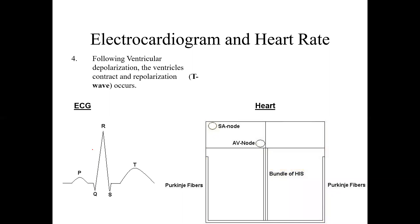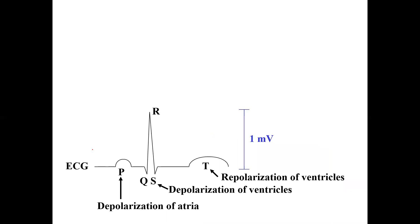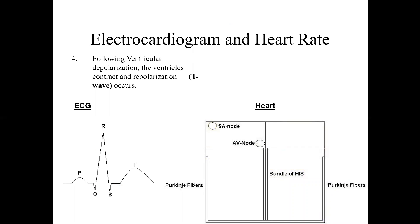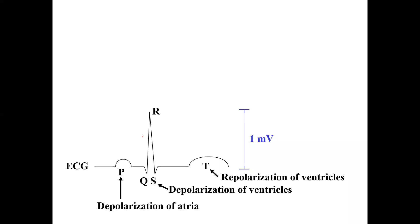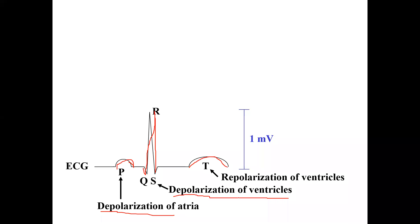After that, ventricles will depolarize. The ventricles contract and repolarization happens — that is the T-wave. So in summary: depolarization of atrium is represented by the P-wave; QRS complex represents depolarization of ventricles; and T-wave represents repolarization of ventricles.